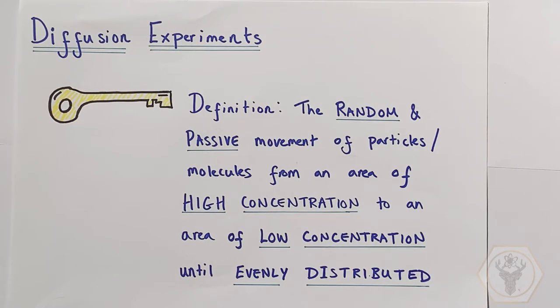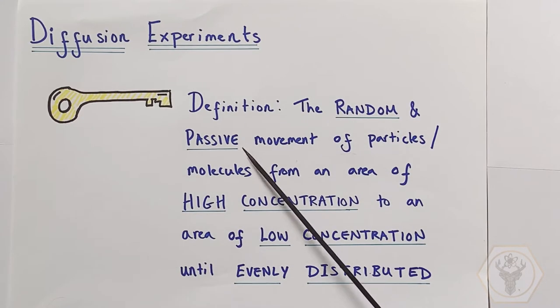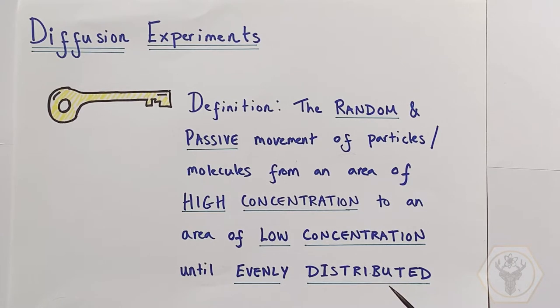The definition of diffusion in a chemical context: It is the random and passive movement of particles or molecules from an area of high concentration to an area of low concentration along a concentration gradient until evenly distributed. This is the best definition of diffusion in a chemical context.